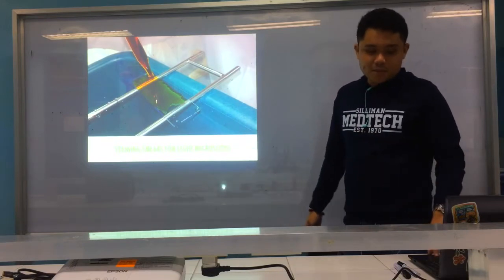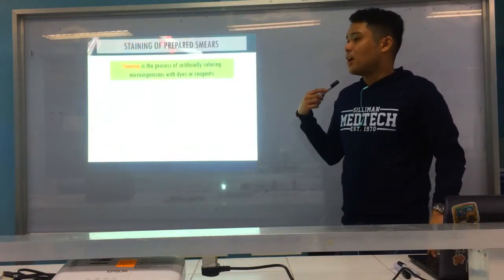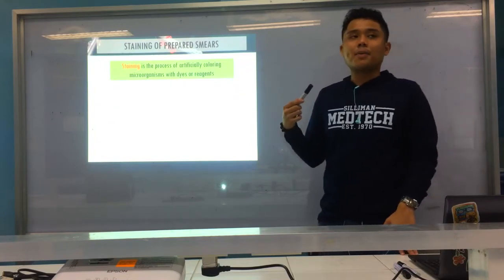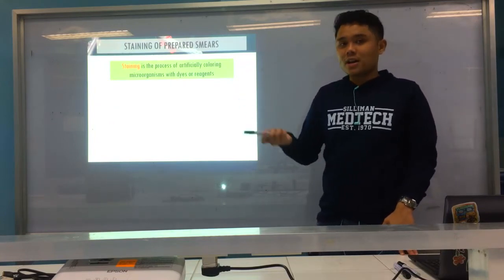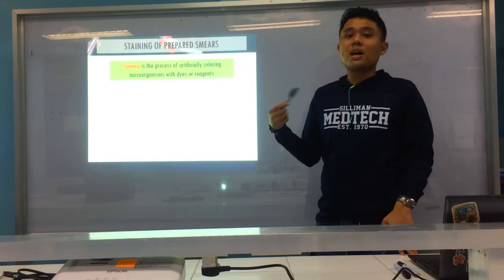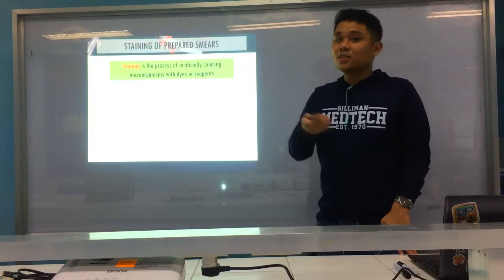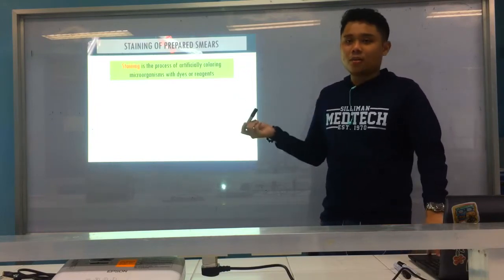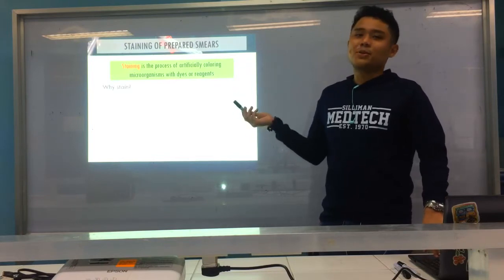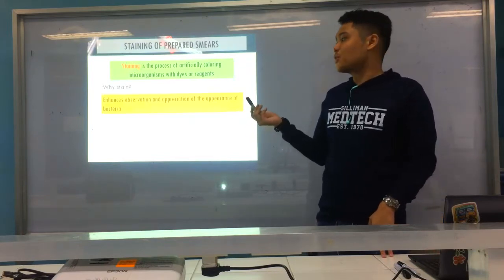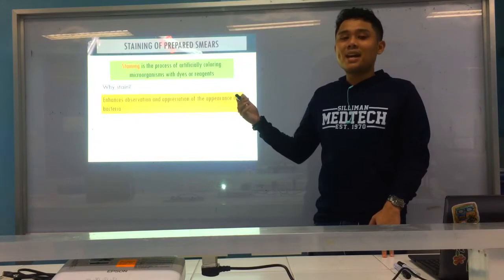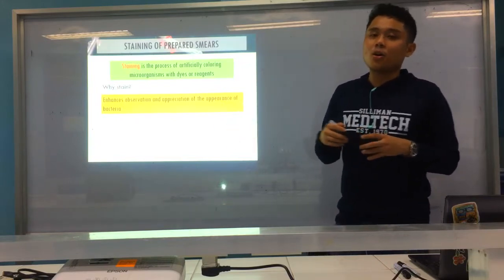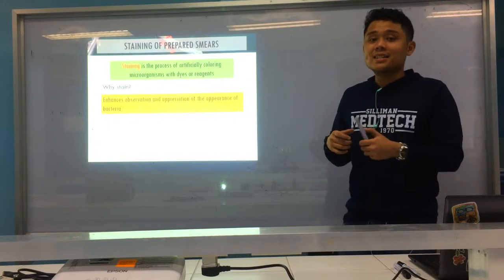These are staining smears for microscopy. When we say staining, it's the artificial adding of colors to microorganisms — not only microorganisms, but also other organisms, may it be cells and tissues. We add color because through the addition of color, we can enhance the observation of our bacteria and other organisms or tissues.